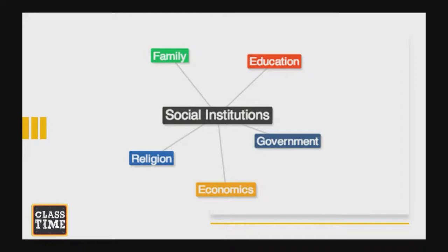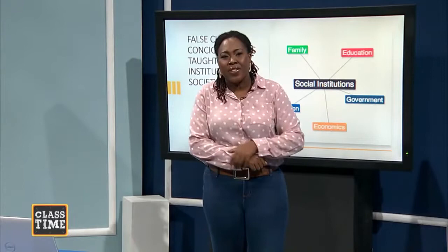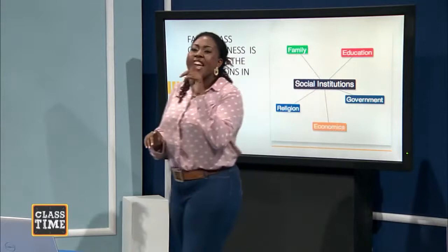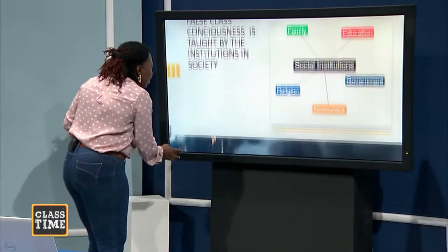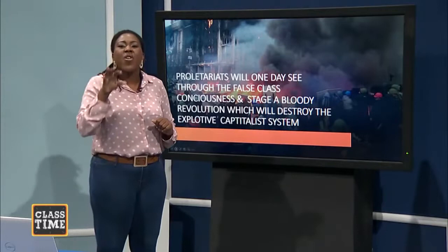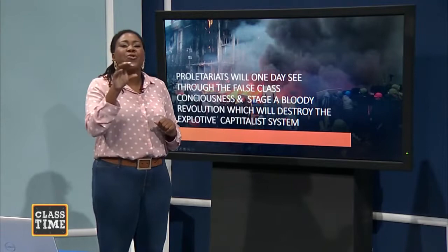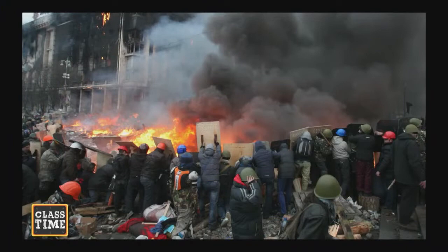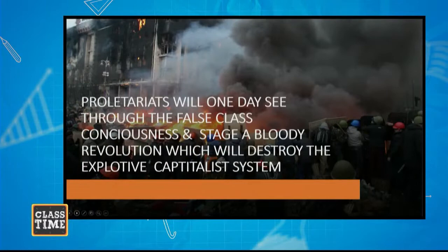However, Marx says this exploitative system may remain for a long time, but it will not be forever. The poor people will suffer and it will seem unending, but it will not be forever. Instead, Marx says there is going to come a time when the proletariats are going to see through the false class consciousness and stage a bloody revolution that will destroy the exploitative capitalist system. Marx says if you look at history — and that is why Marx's theory is called a historical theory — throughout time, once you have exploitation, there has always been a revolution.